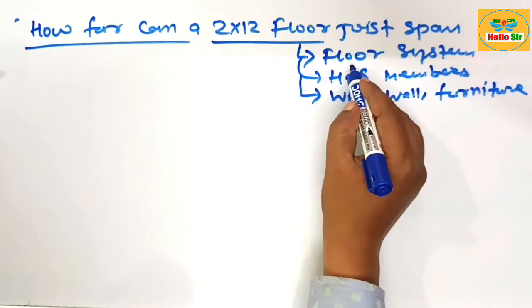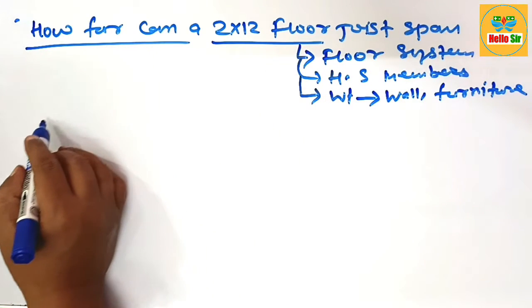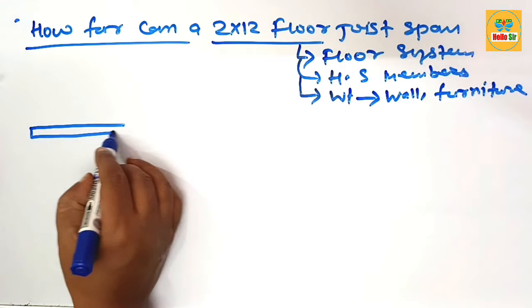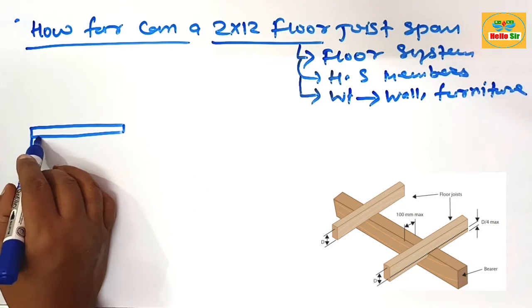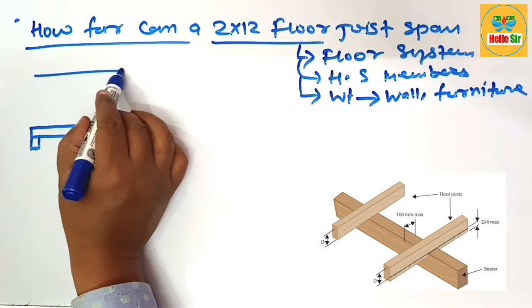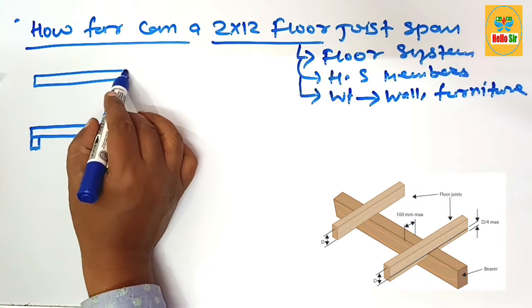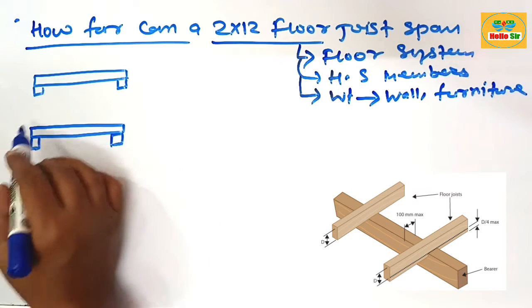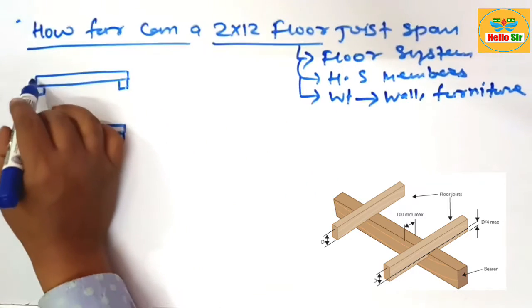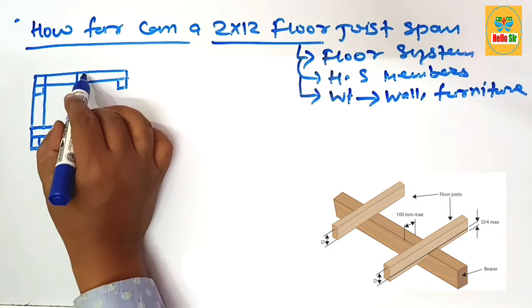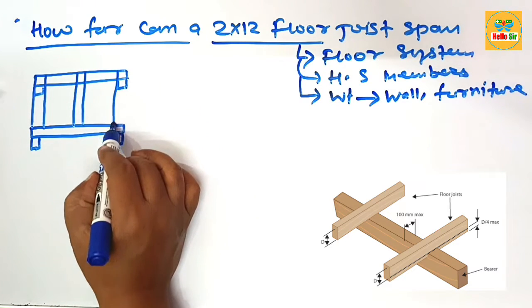First, we'll make a rough diagram to understand the floor system. Suppose this one is the beam structure, this is the foundation, and another beam runs parallel to this beam with this foundation. Your floor joist runs horizontal like that, connecting the beam structure.